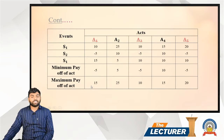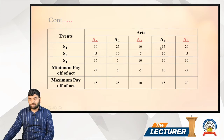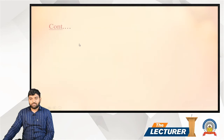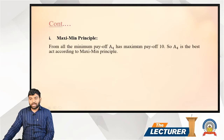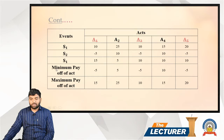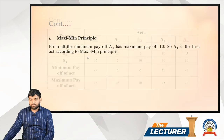The maximum payoffs are: minus 5, 15, 25, 10, 15, and 20. These are the maximum payoffs. Now applying the Maximin principle: from all the minimum payoffs, a4 has the maximum minimum payoff of 10, so a4 is the best act according to the Maximin principle.